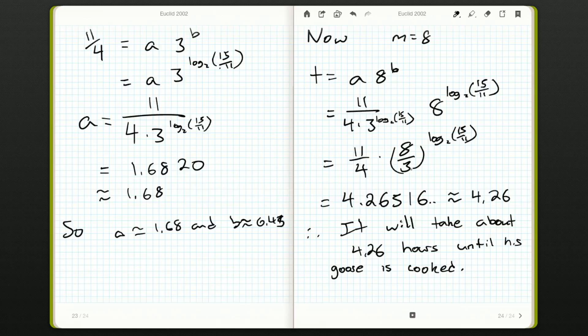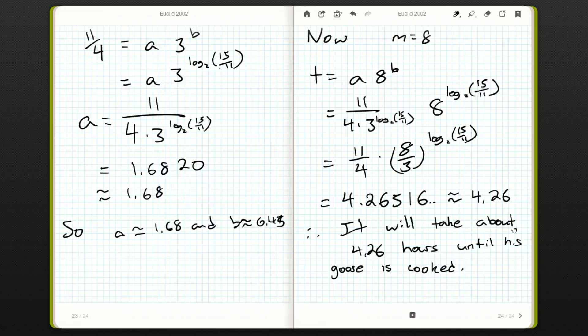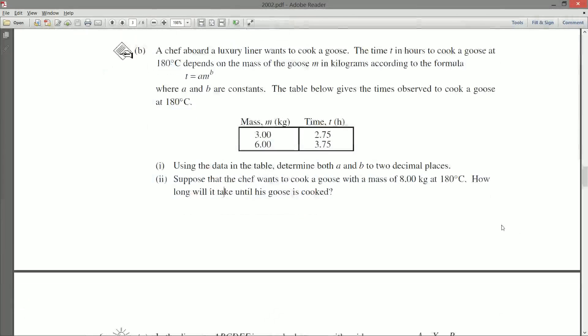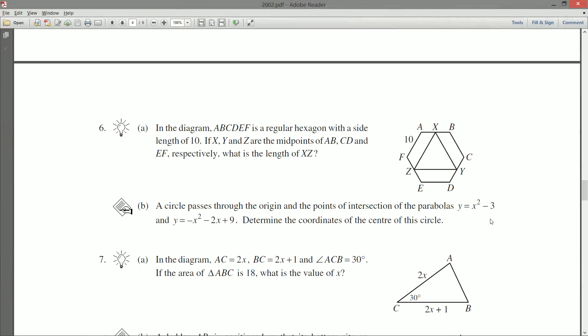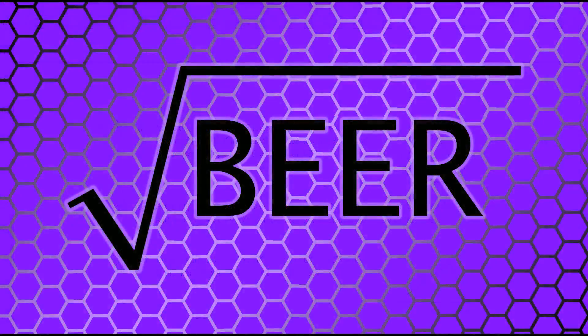So I think leaving it this way is fine. If I had time at the end of the contest, I might come back and see if I can simplify it. I don't think I can right now, so I think we're done with question number five. But question six will be the next video, and we'll take a look at question number six on the 2002 Euclid.